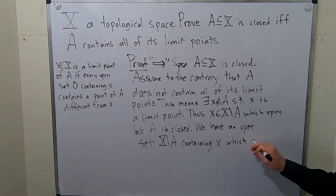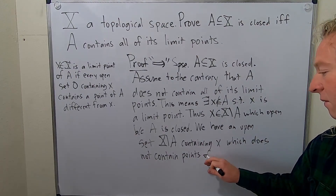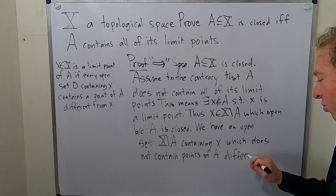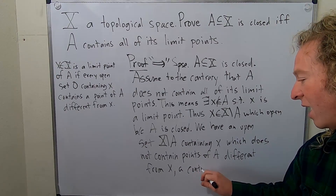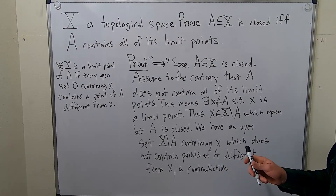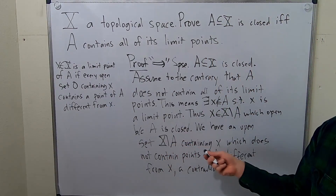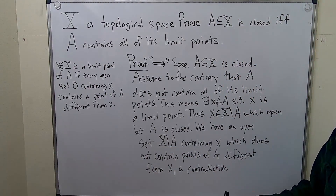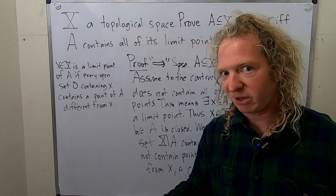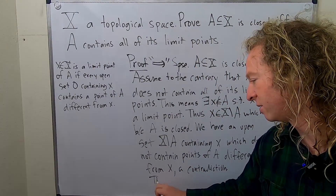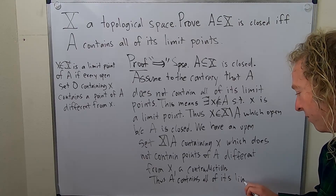This open set does not contain points of A different from X. This is a contradiction because we said that X was a limit point — if it's a limit point, then whenever you have an open set containing X, it must have points of A different from X. Here we've exhibited an open set containing X with no points of A, contradicting our assumption. Therefore, A must contain all of its limit points.